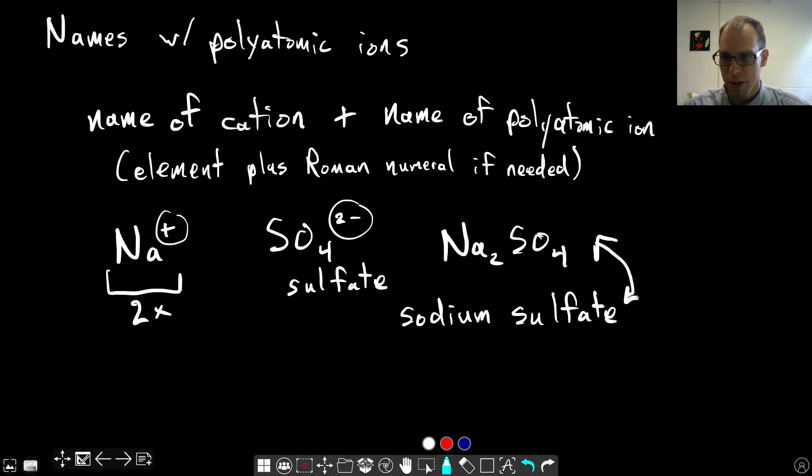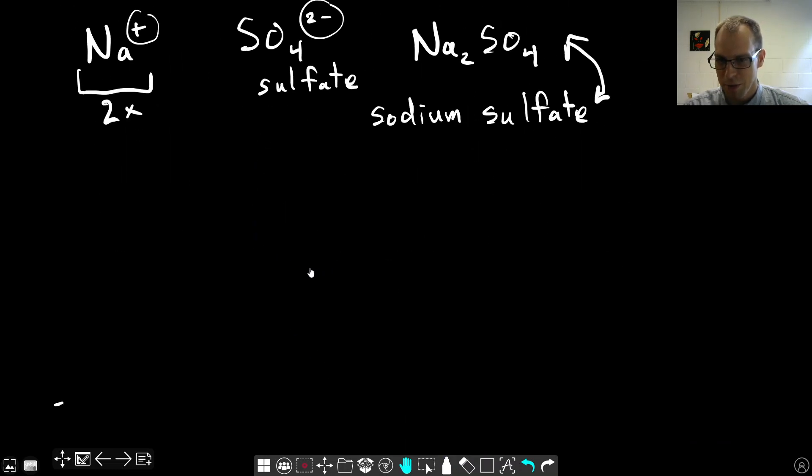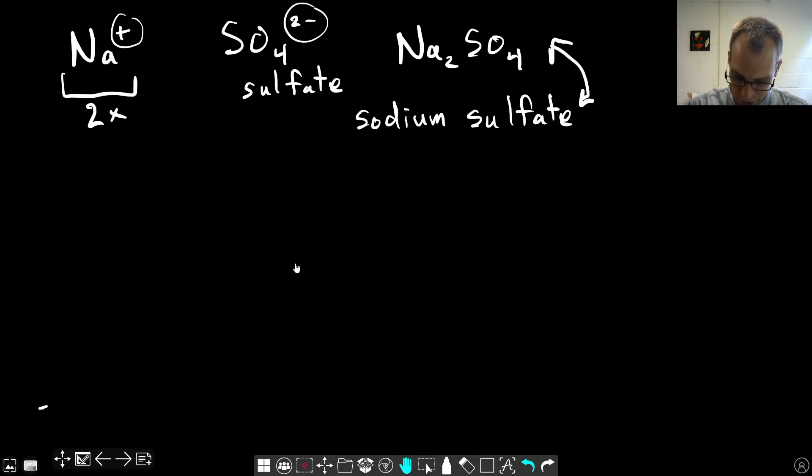Let's do one more example with charges that are a little bit different. We'll pick calcium, Ca2+, and then a polyatomic ion that has a negative three charge, phosphate, PO4^3-. You can look this up in the list of ions I gave you. The name of this, when we combine these, is simply going to be calcium phosphate. So the naming part is actually not hard at all here.